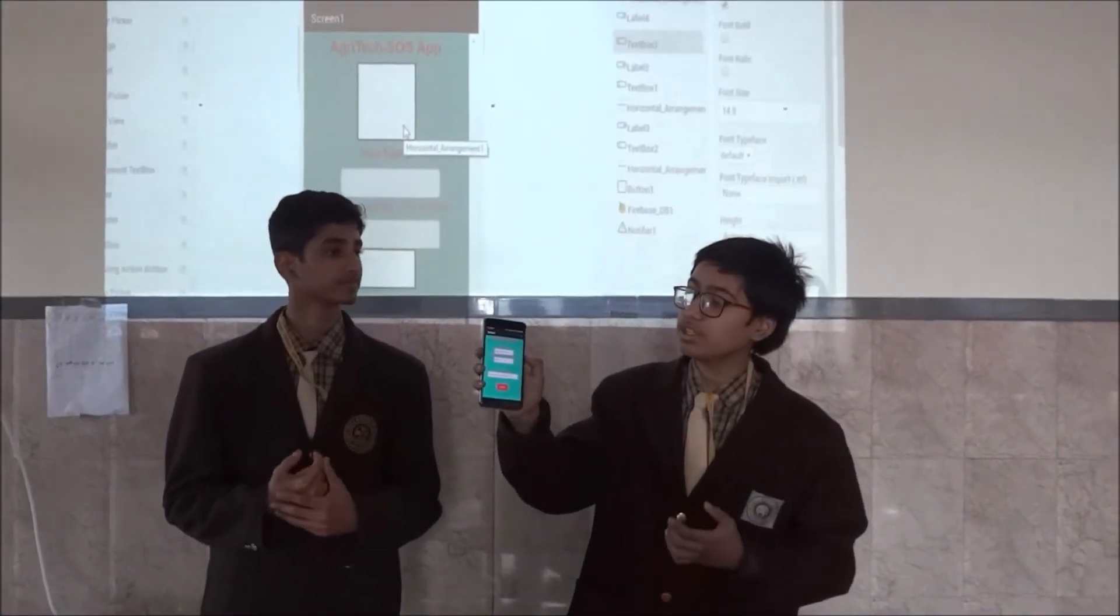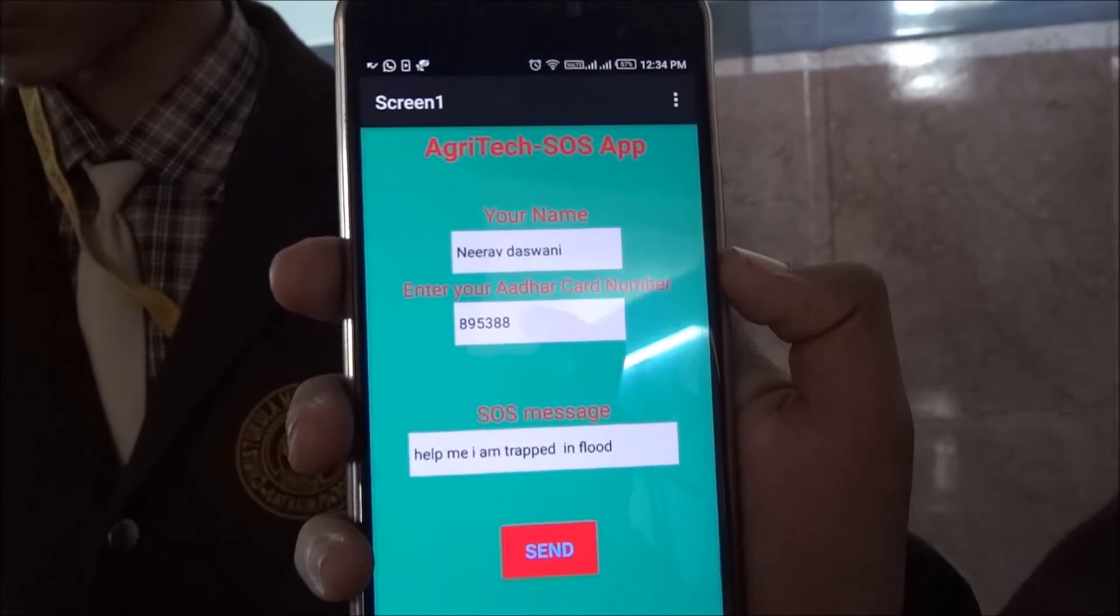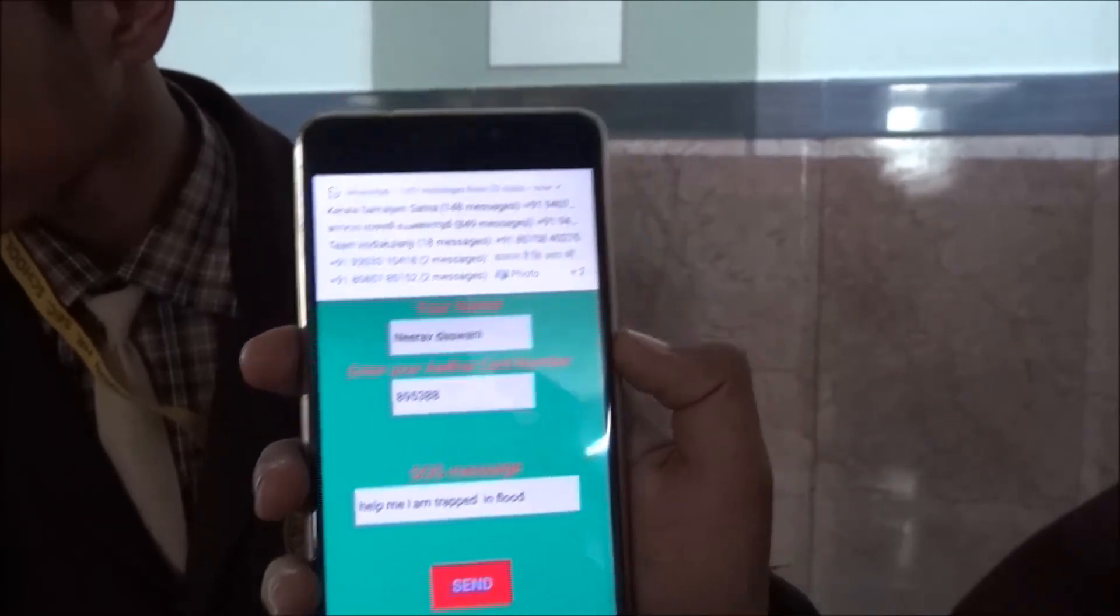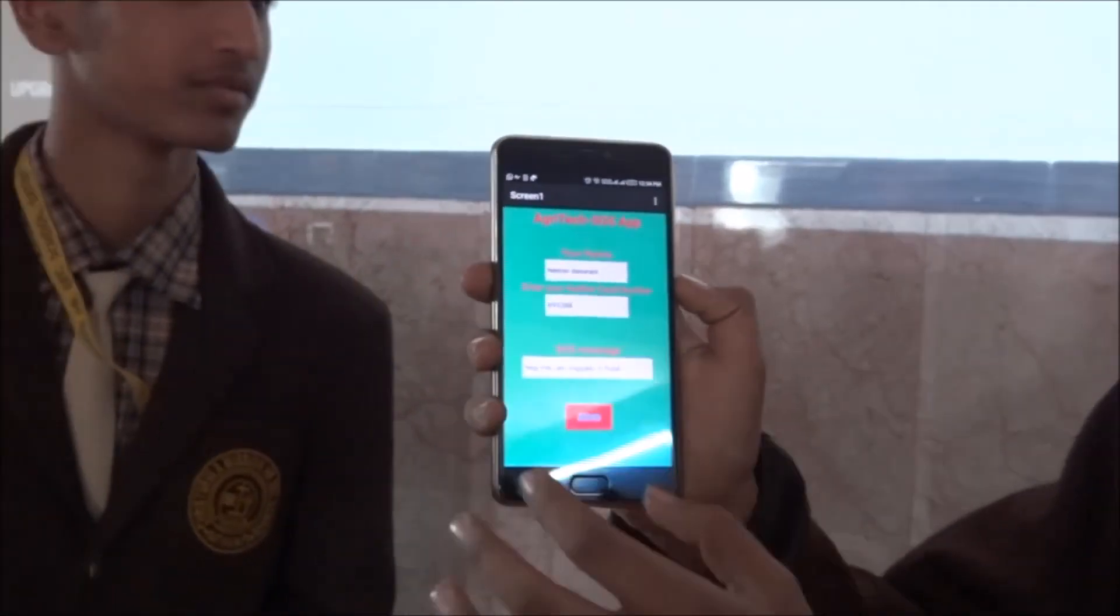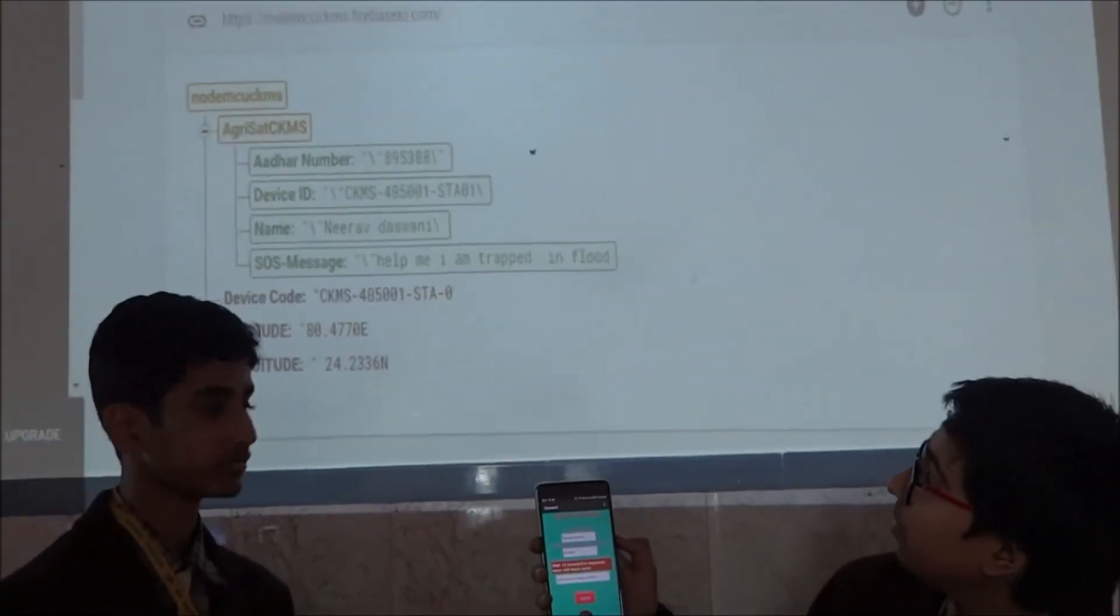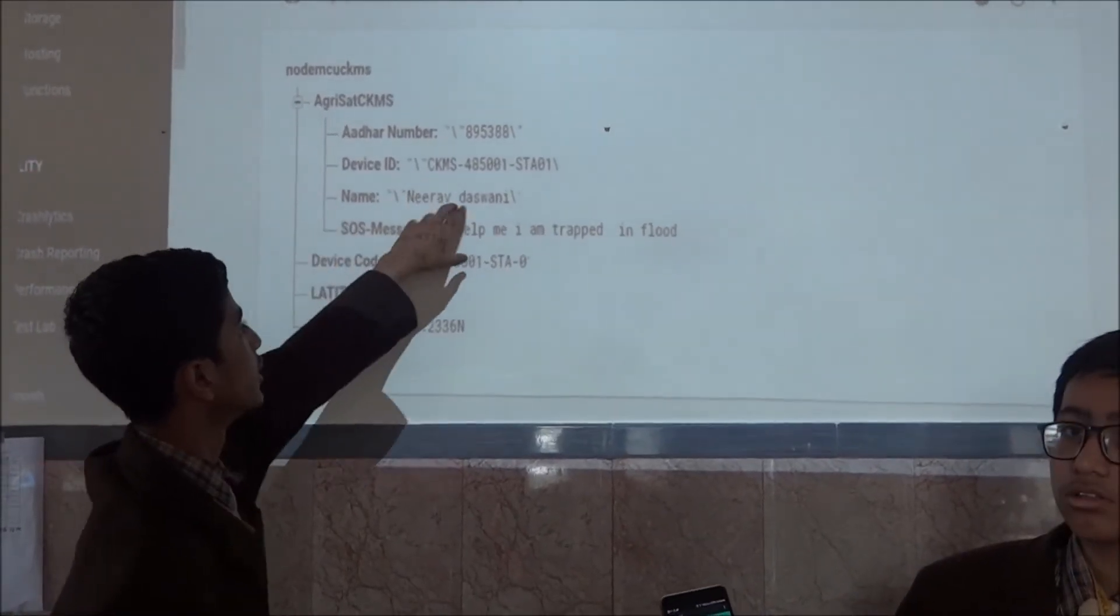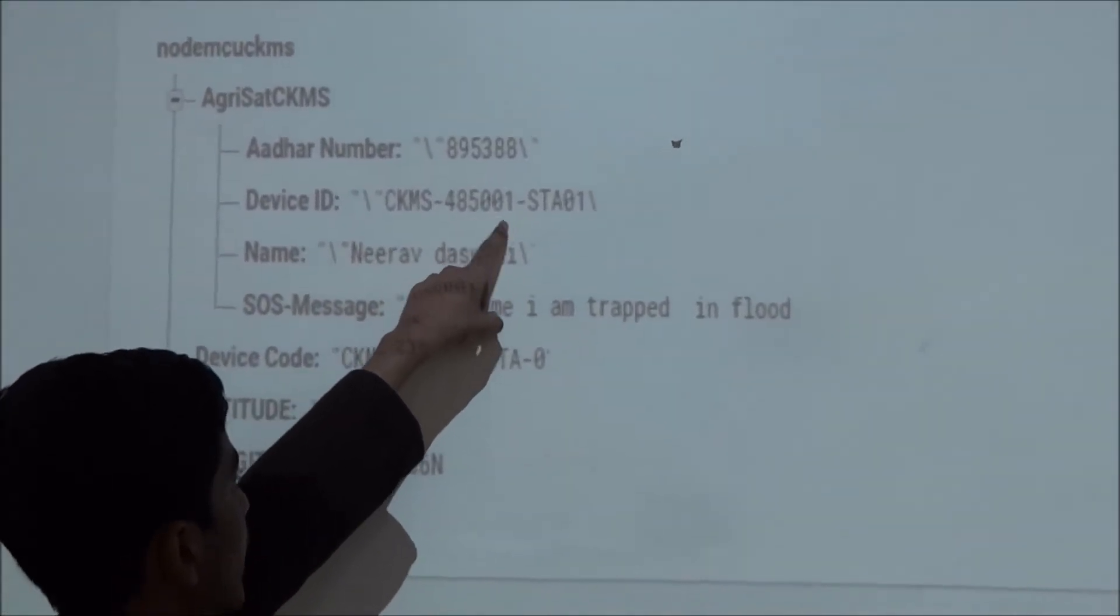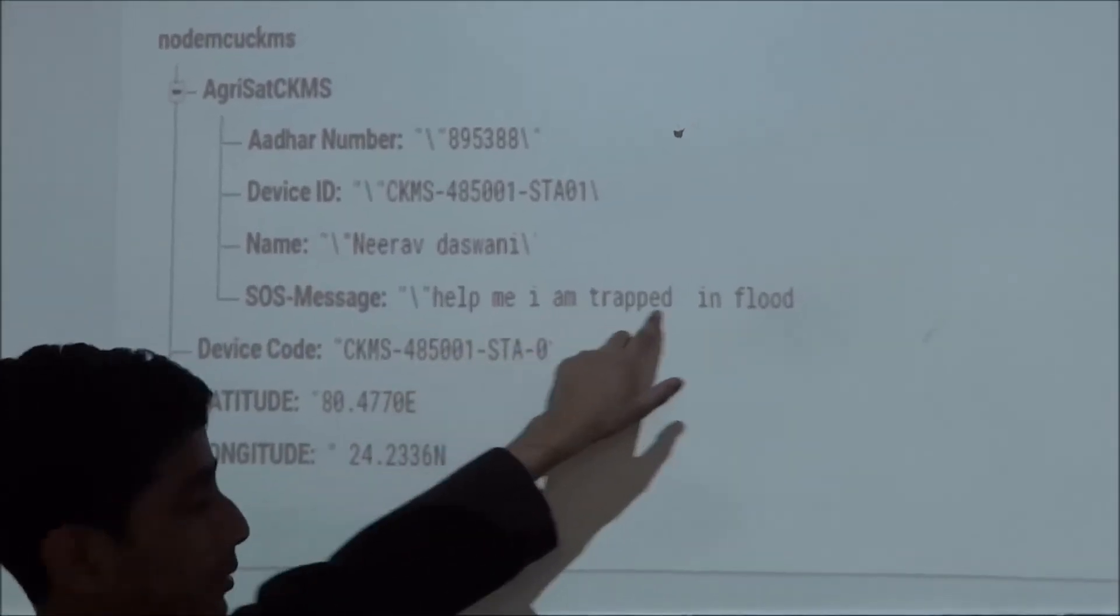For the purpose of SOS, we have actually made an app named Aintech SOS app in the Thunkable platform which is an Android platform. So, here you can see I am sending an SOS message to the database. I have specified my name, Aadhaar card number and SOS message. So, when I am sending it, this is a blank for a fraction of a second, it will upload it. So, here you can see that the data that he sent came with Aadhaar number this. And we also have a device ID that is CKM, which is code 485001SDS01. His name is Niranth Aswami and the SOS message also, Help me and Thunkable.